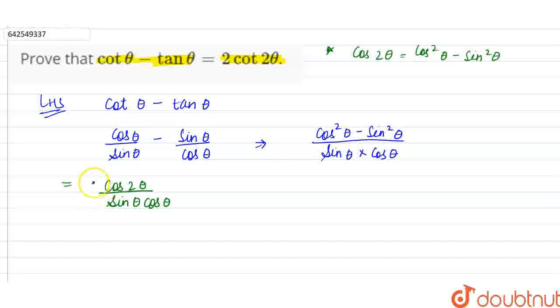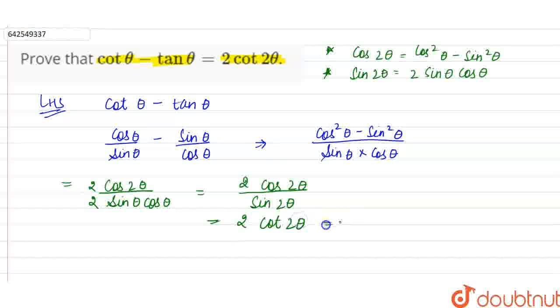Now what we have to do? We have to multiply by 2 in the numerator and the denominator. So in the numerator, it will be 2 cos 2 theta and in the denominator, the formula for sin 2 theta is 2 sin theta into cos theta. So in the denominator, we can write it as sin 2 theta. Now we know cos upon sin is cot, so which is equal to 2 cot 2 theta, which is equal to right hand side and we have proved this question.